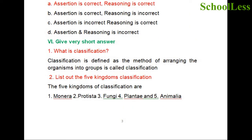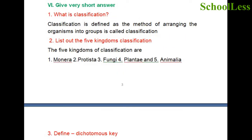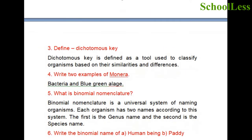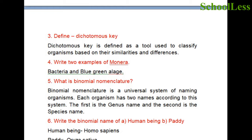Question 6: Give very short answers. 1. What is classification? Classification is defined as the method of arranging organisms into groups. 2. List the 5 kingdoms of classification: 1. Monera, 2. Protista, 3. Fungi, 4. Plantae, 5. Animalia. 3. Define dichotomous key: A dichotomous key is a tool used to classify organisms based on their similarities and differences.